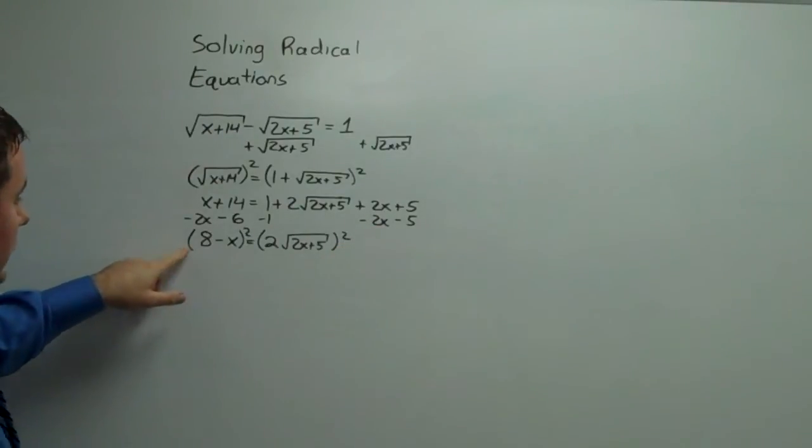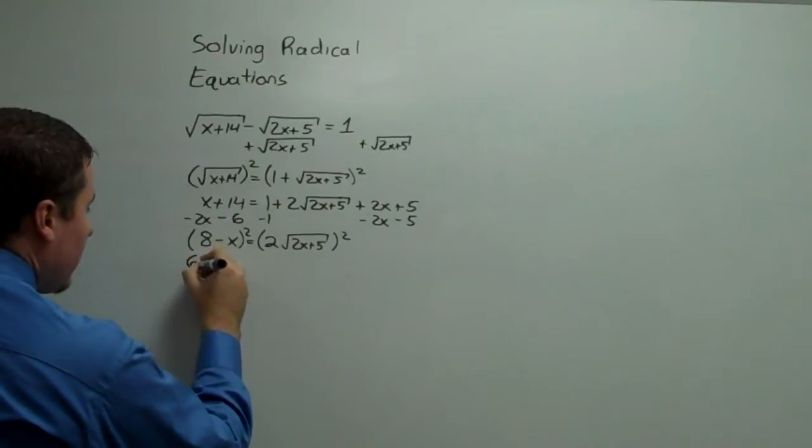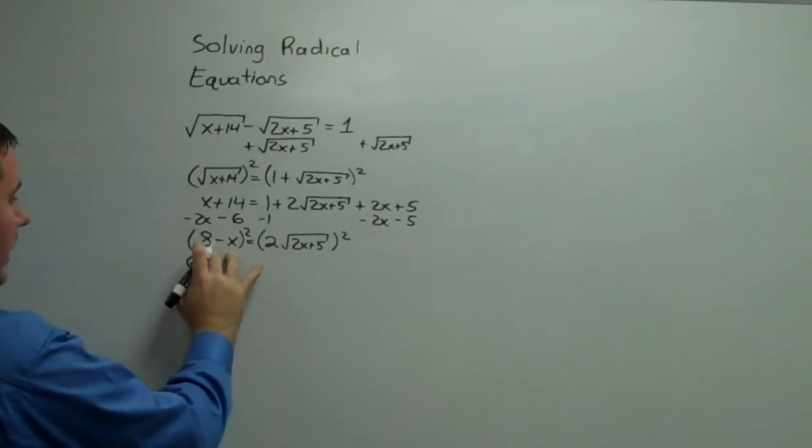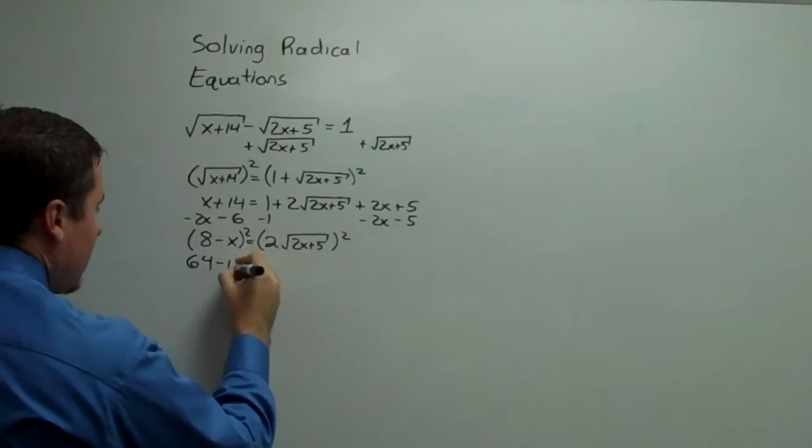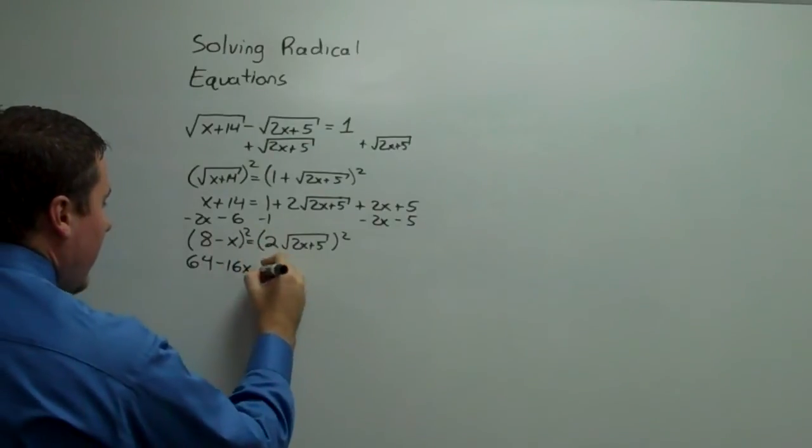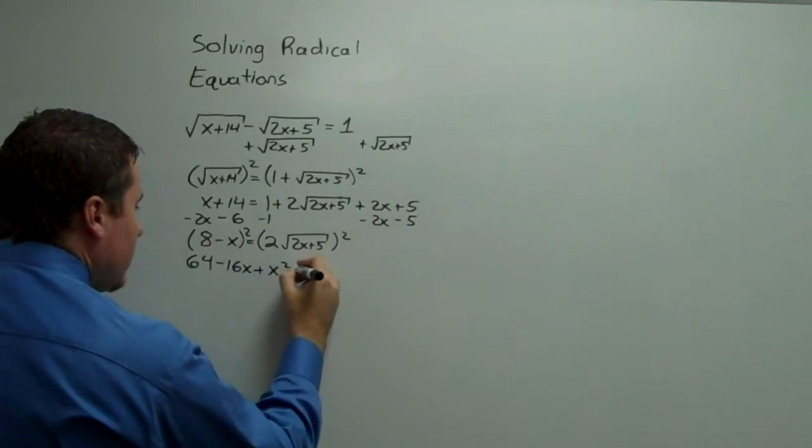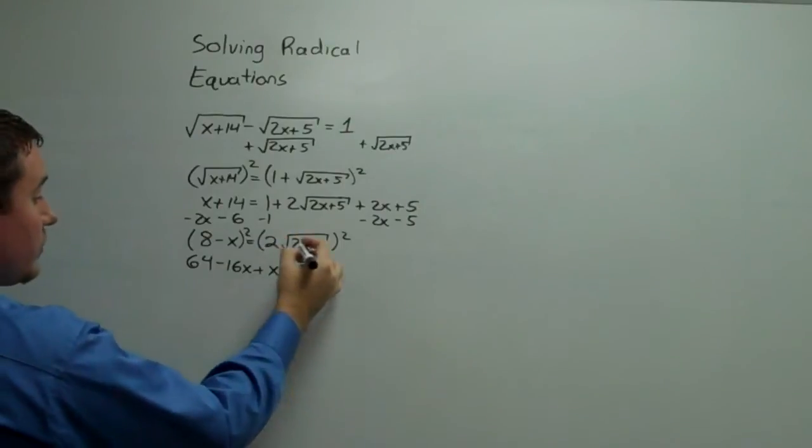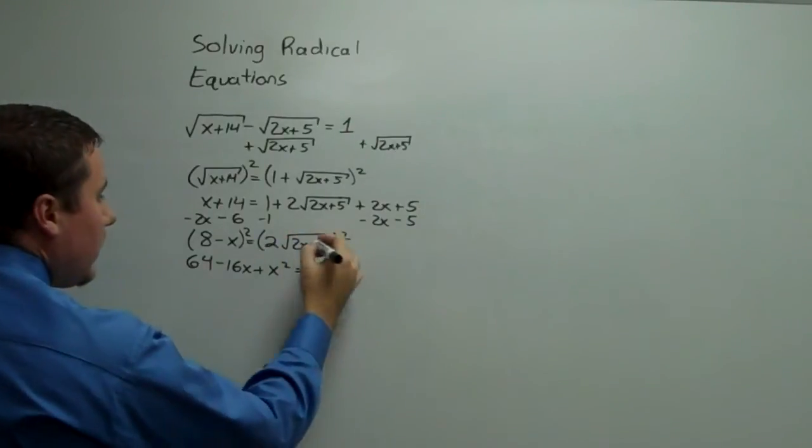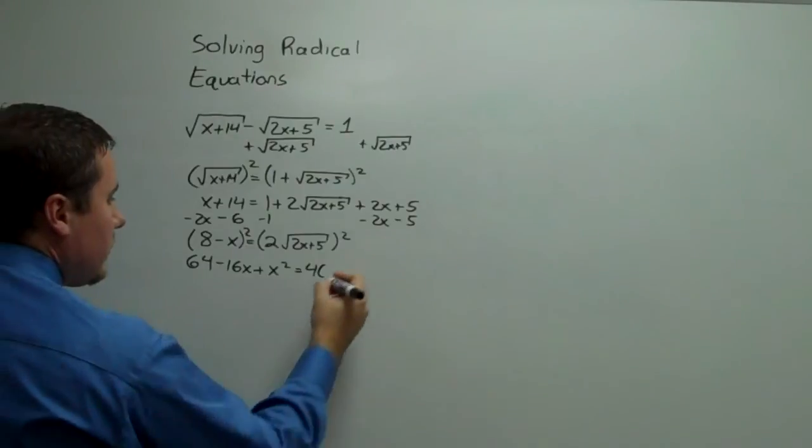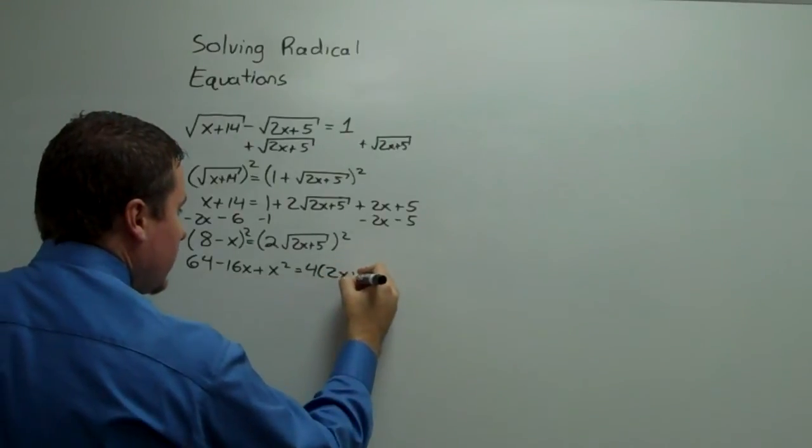this now is another binomial squared, so 8 squared is 64. Twice the product is negative 16x, and then x squared, positive, of course, is equal to 2 squared, which is 4. And then this square root goes away, and we have 2x plus 5.